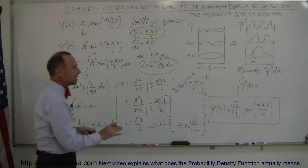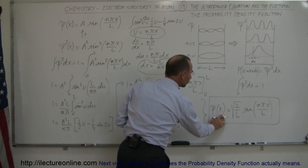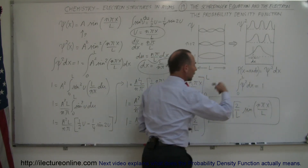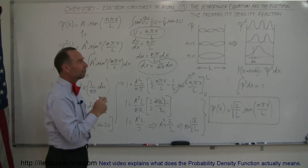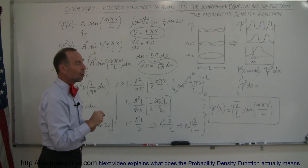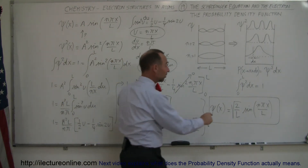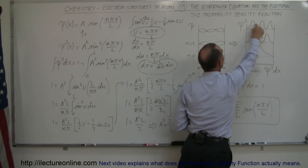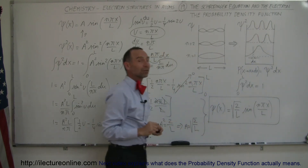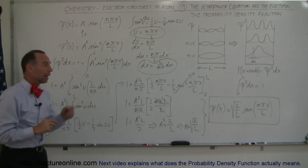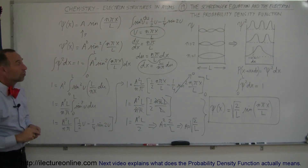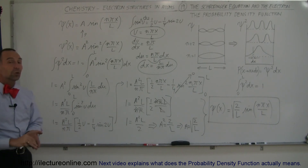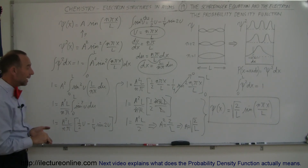If we now square this function, we come up with the function describing the probability of where the electron will exist. Squaring this function produces these particular graphs for the probability of where the electron can exist. We'll show how we use that equation to describe how electrons exist in the orbitals of the atom.